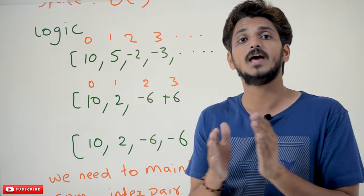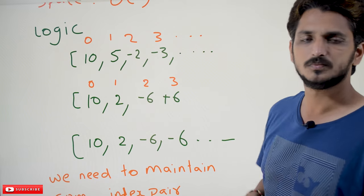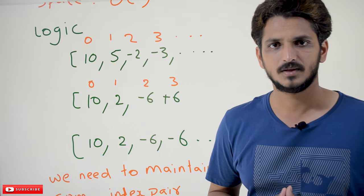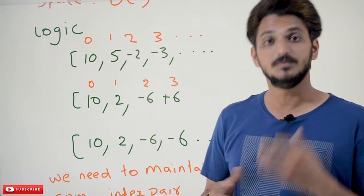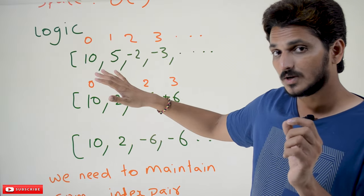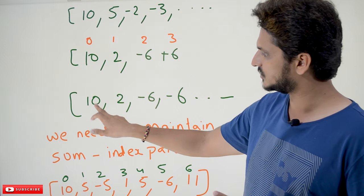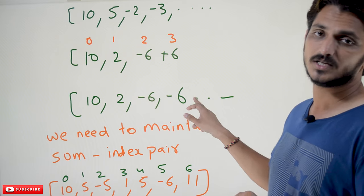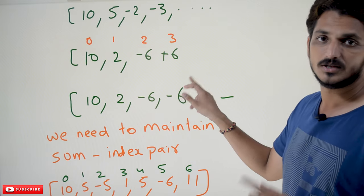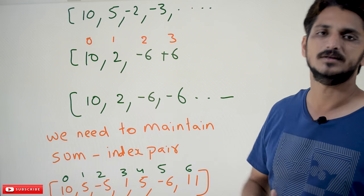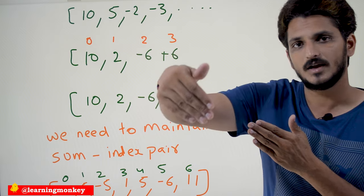To maintain that, we use a hash table with key-value pairs: summation mapped to index — for example, 10→0, 12→1, 6→2. In Python we use a dictionary for this. There are two conditions: first, if the running summation is 0, then the number of elements so far (index + 1) is the length. Second, if the current summation matches a previously stored summation in the hash table, we can identify the subarray length between those two positions.